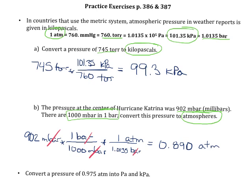And again, we can double check our answer and make sure this seems reasonable. So we've got 902 millibar, which is going to be a little bit less than a bar, and a little bit less than a bar should be a little bit less than an atmosphere. So everything still makes sense.